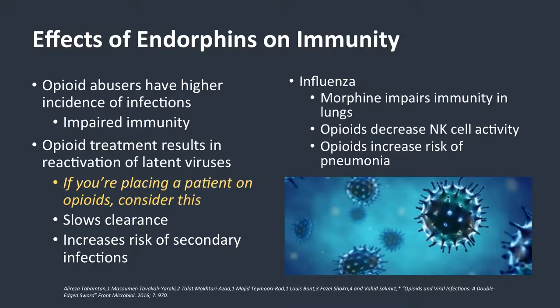Our nervous system is not just our neurotransmitters — it's also endorphins. And endorphins have an effect on immunity as well. We know that exogenous endorphins like opioids impair immunity. In fact, if somebody is on opioids for treatment of pain, it slows the clearance of pretty much any infection, but especially flu.